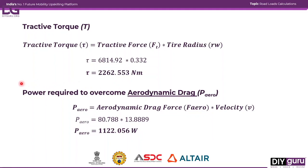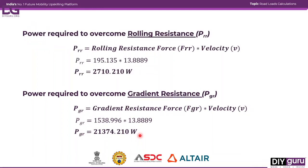Moving to power calculations, we need power to overcome each of the different resistive forces. First, the power required to overcome aerodynamic drag is the aerodynamic drag force multiplied by the velocity of the vehicle. The vehicle velocity considered is 50 km/h, which equals 13.889 m/s. Multiplying this velocity by the drag force, the power required to overcome aerodynamic drag is 1122.056 watts.